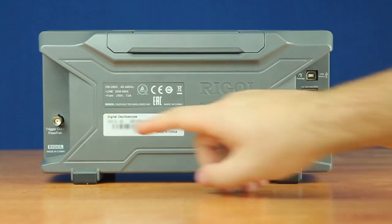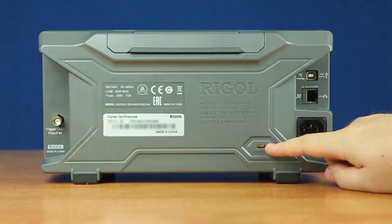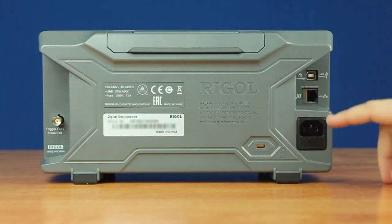On the back panel of the instrument, we have our trigger out and pass-fail out over here. Then we have our computer lock here, followed by a USB port and LXI port, and then finally our power port.